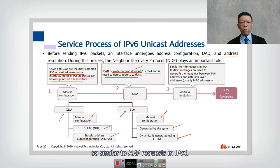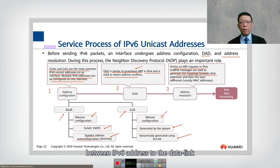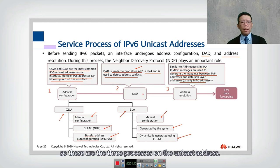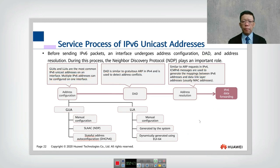The third process is address resolution, which is the IPv6 equivalent of ARP. IPv6 ICMPv6 messages are used to generate a mapping between an IPv6 address and the data-link layer address. The solicited-node address is used here before data forwarding can occur. These are the three processes for IPv6 unicast address handling.